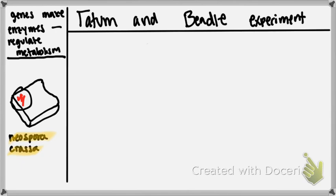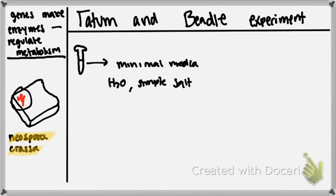And this red right here is actually what I'm using to represent that. So I'm going to probably be using a highlighter in that color to represent just the growth of the Neurospora. And what they did is they actually took a minimal media. So what minimal media means is it's media, which is an environment. And inside this environment, we have like H2O, we have simple salt, we have some sugar.